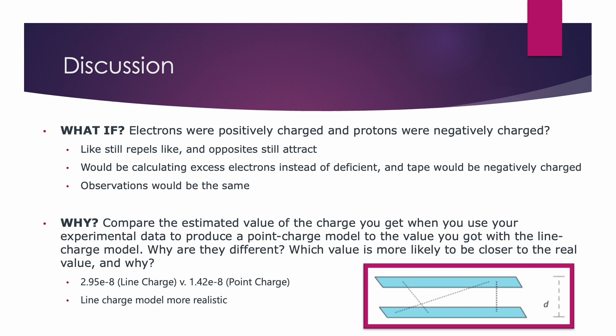If charges were swapped, we'd have the same observations. Instead, our U-tape would just be negatively charged, and we'd be calculating excess electrons instead, but like still repels like, and opposites still attract.